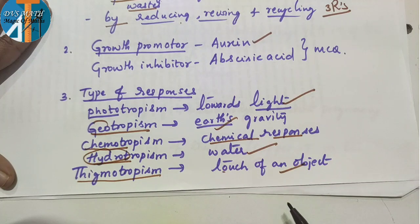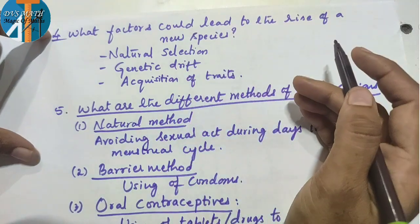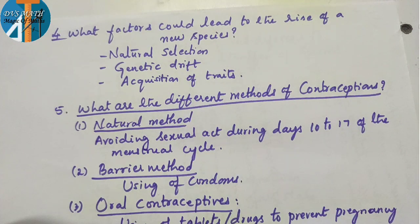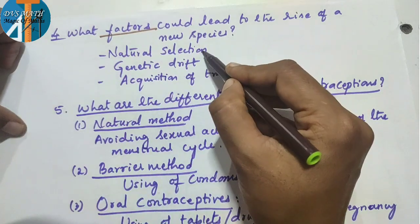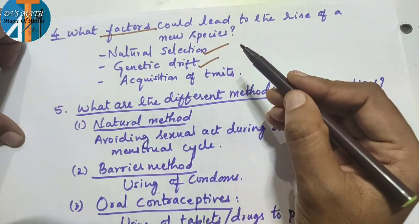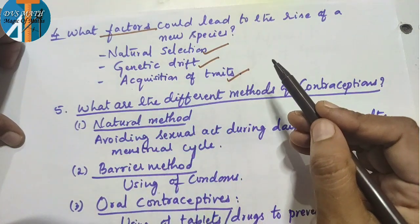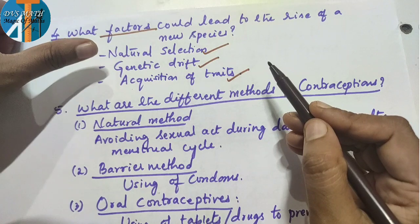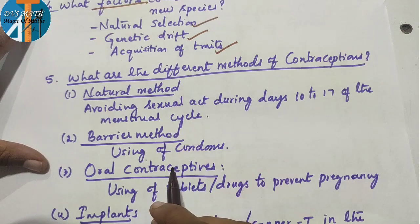Factors that could lead to the rise of new species: natural selection, genetic drift, and acquisition of traits.